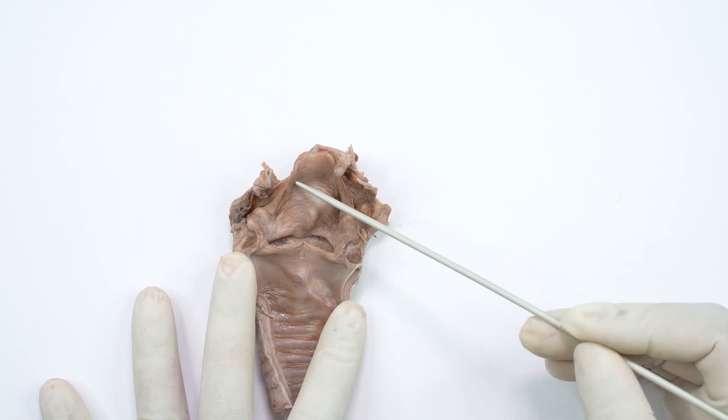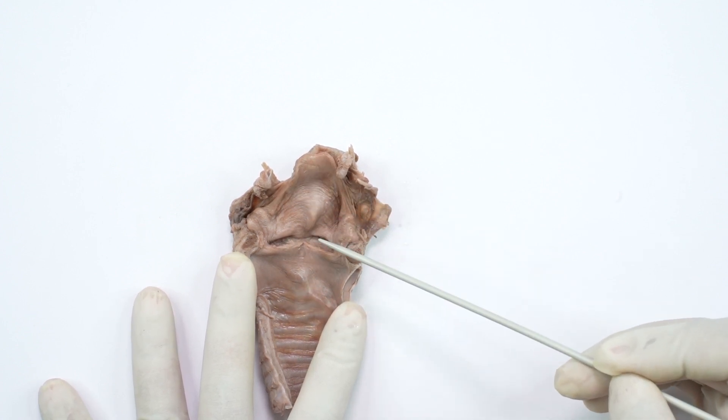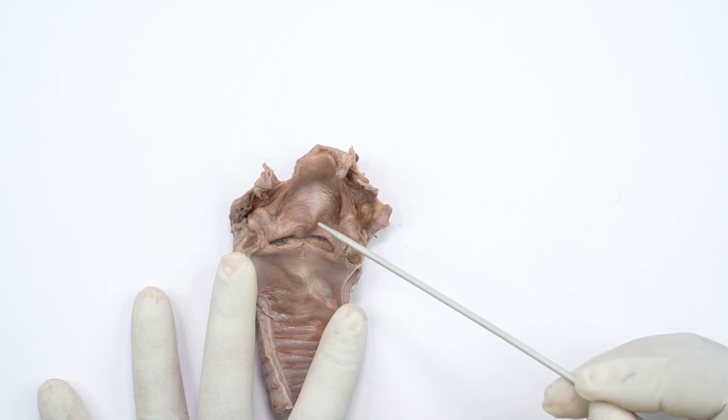The supraglottic part is the widest part of the larynx. This part of the larynx is innervated by the internal laryngeal nerve.